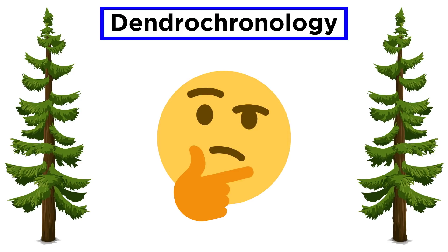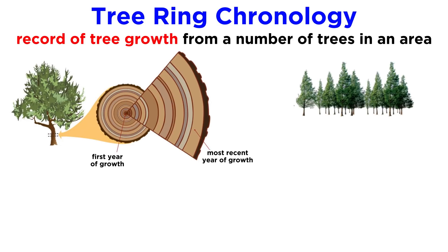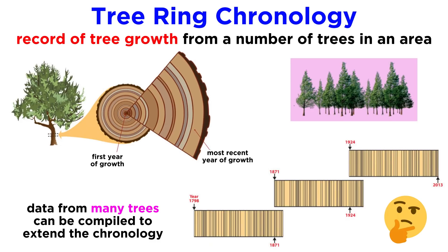Before we get started, there are some important terms that need to be defined, or nothing that follows will make much sense. The first term is part of the name of the field itself: chronology. A tree ring chronology is a reliable representation of tree growth — basically a record of tree growth from at least ten sampled trees in an area, though some contain records from more than one hundred trees.